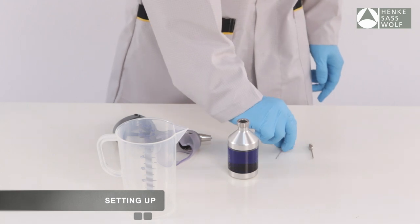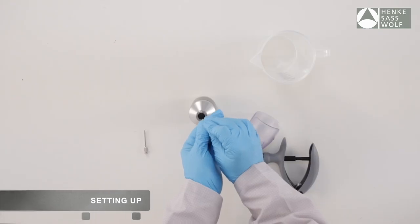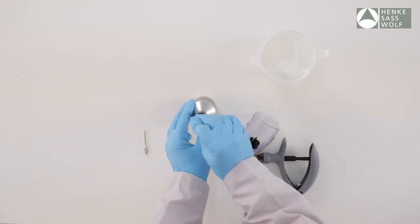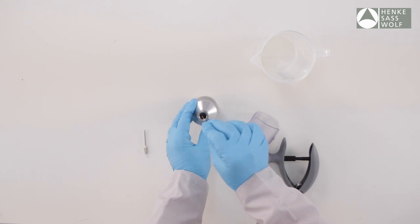At first, pierce the rubber cap of the bottle with a sterile needle before you attach the bottle onto the spike, making a pilot hole.